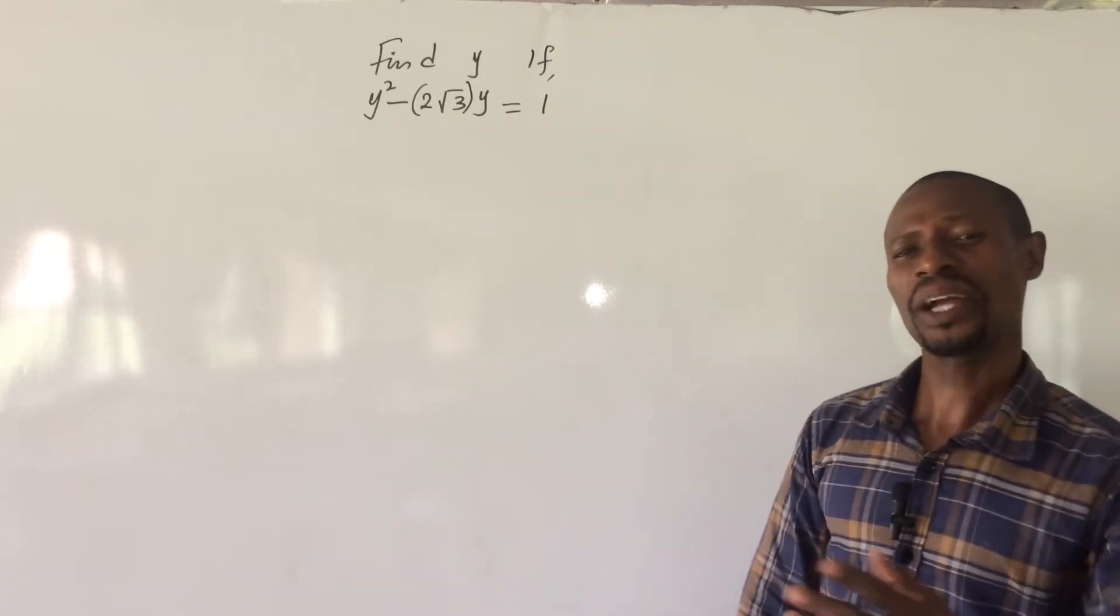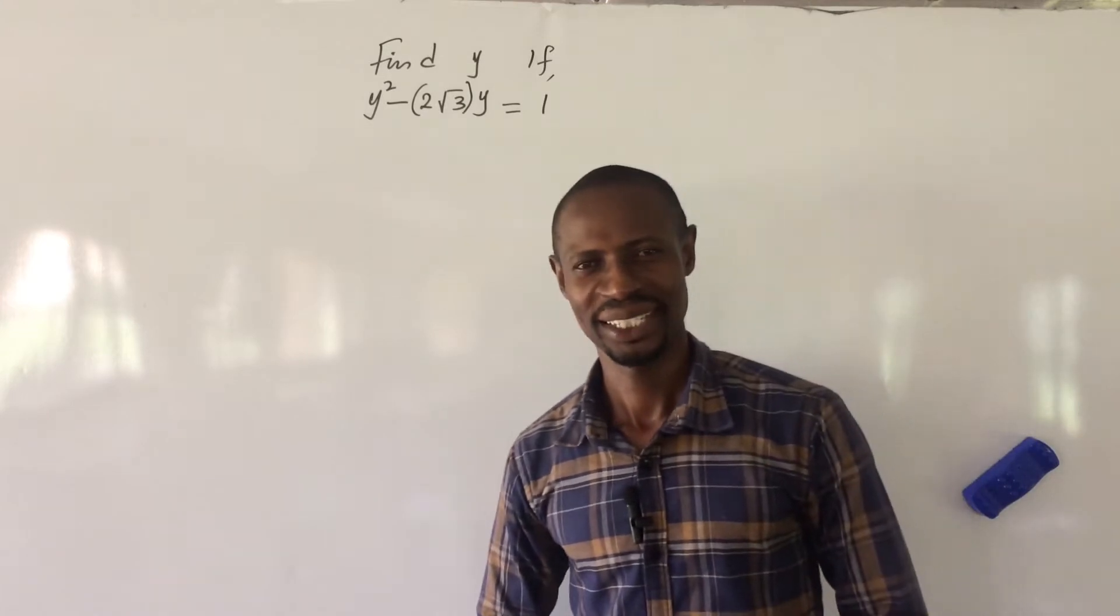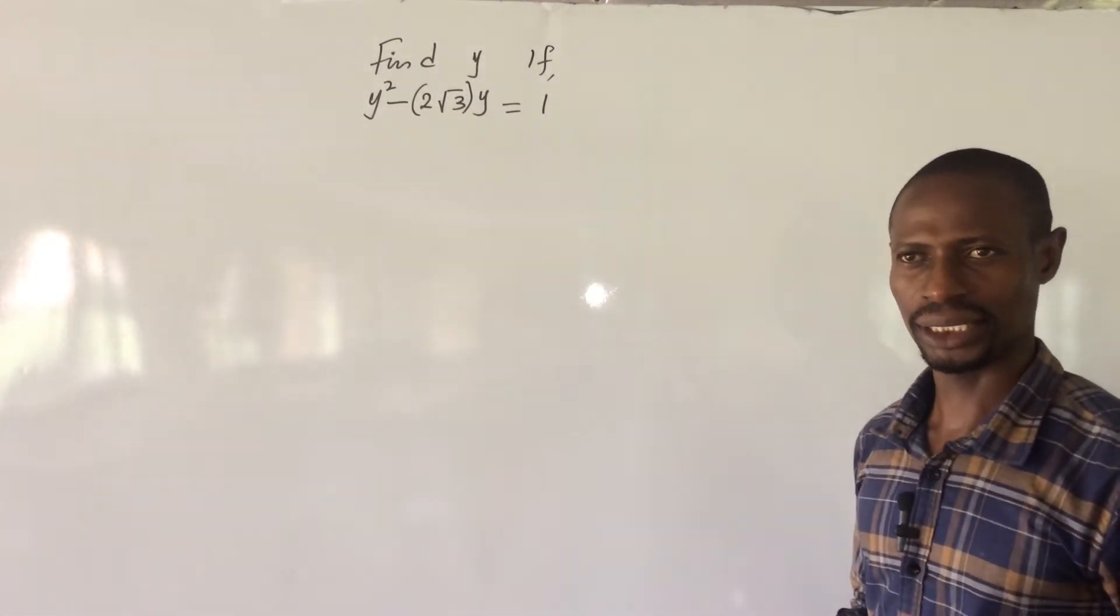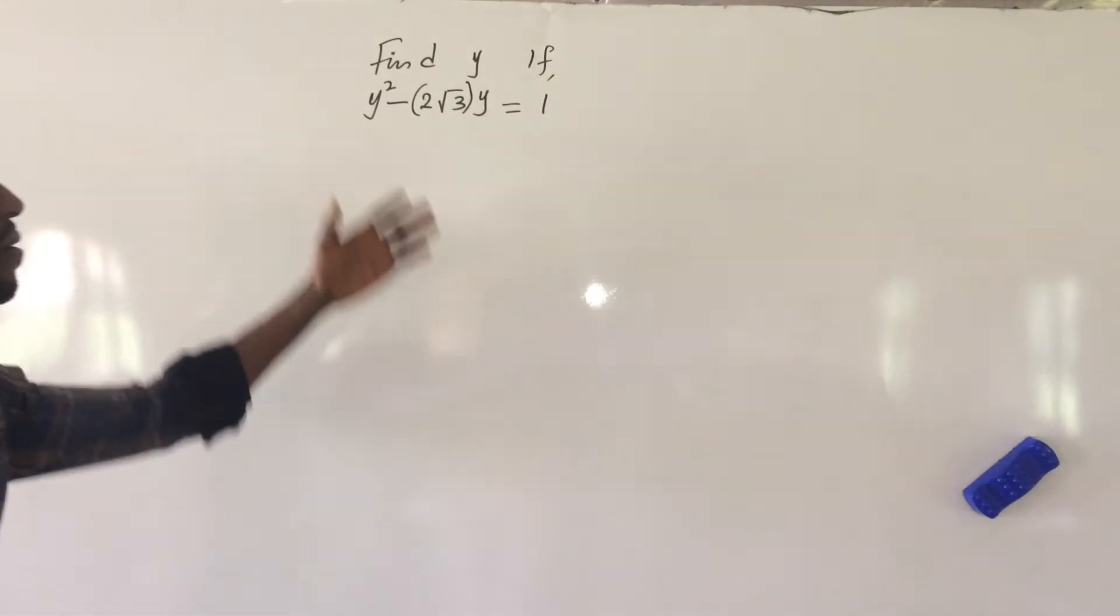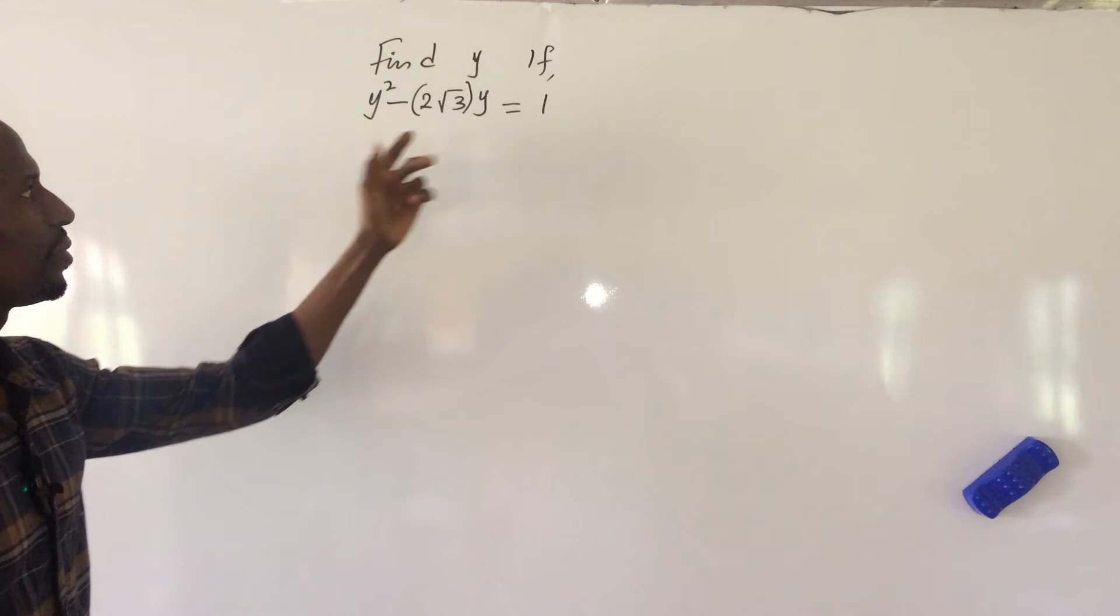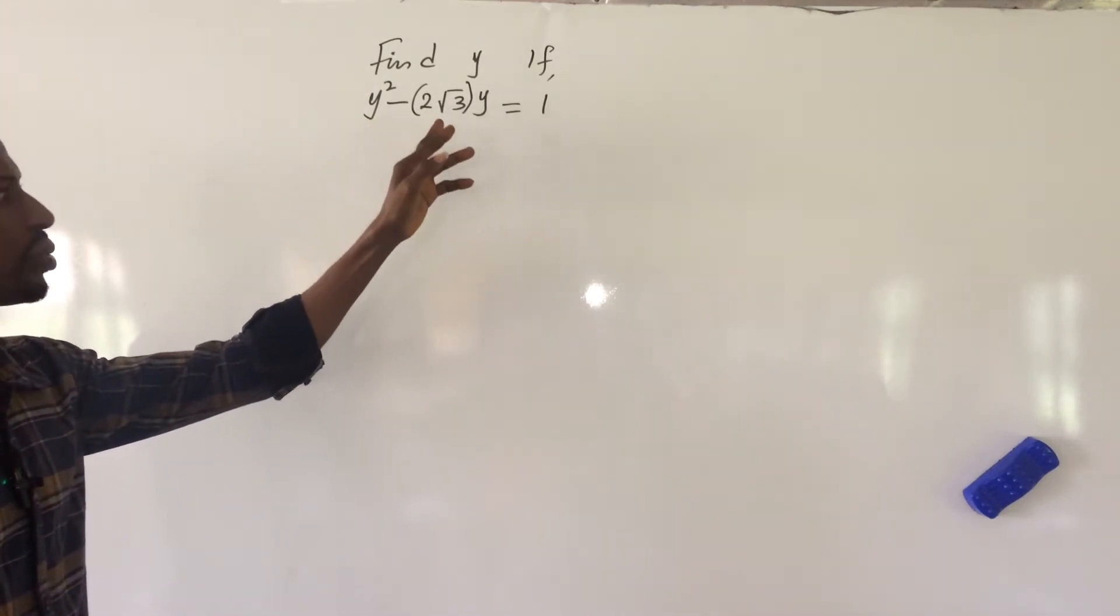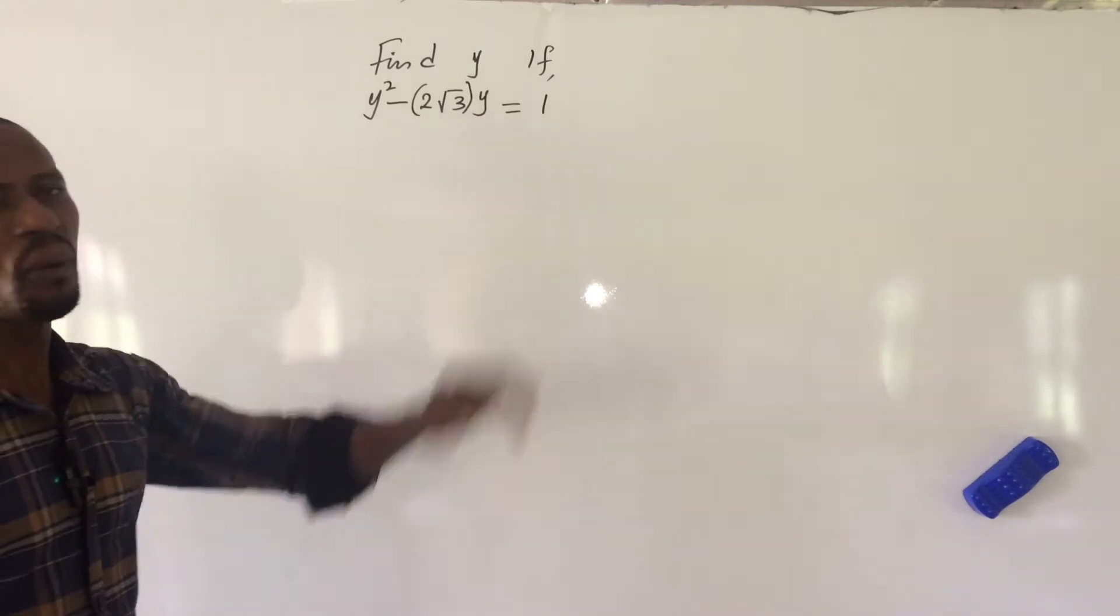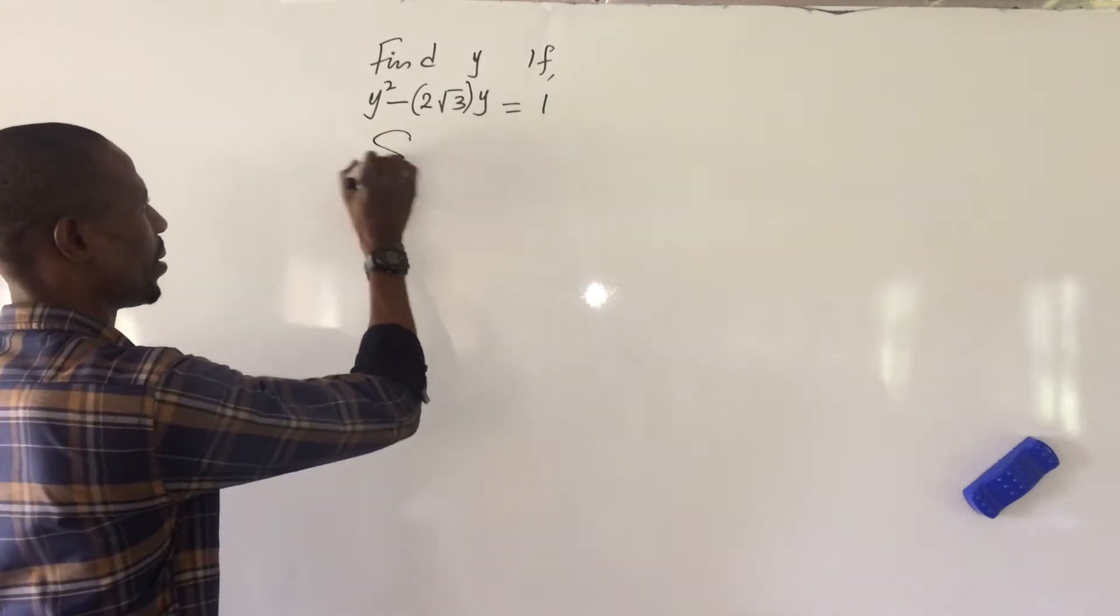All right, welcome to All-I-Mans TV. My name is Jakes Anemo and here in today's class we have another challenge on quadratic equation and it reads, find y if y squared minus 2 root 3 into y equal to 1. So, how do we go about this? Let's take our solution.